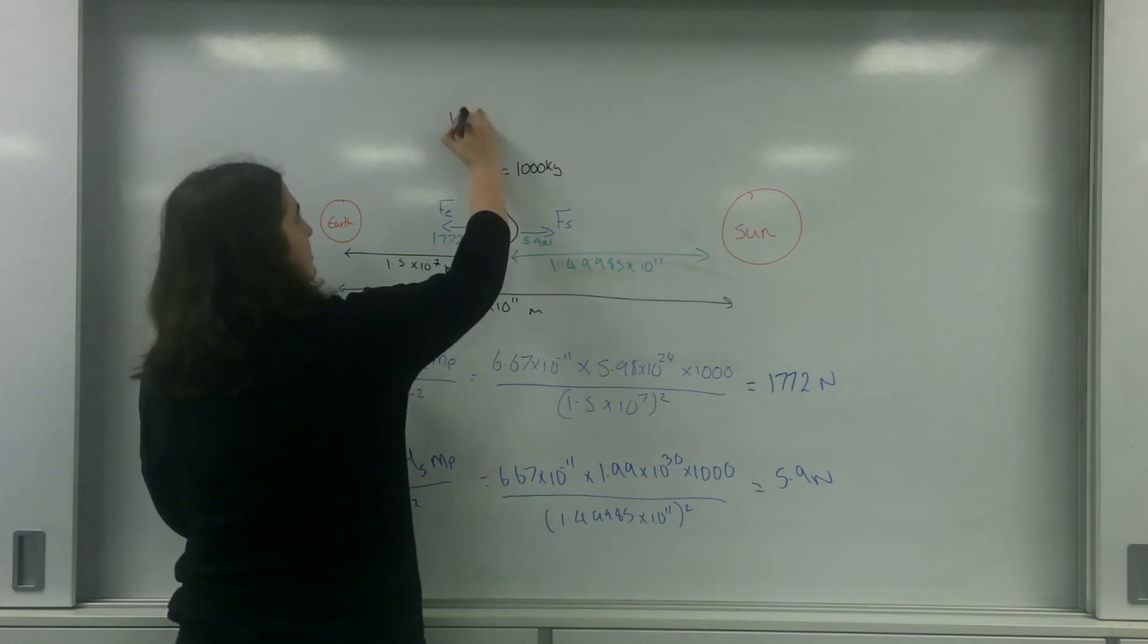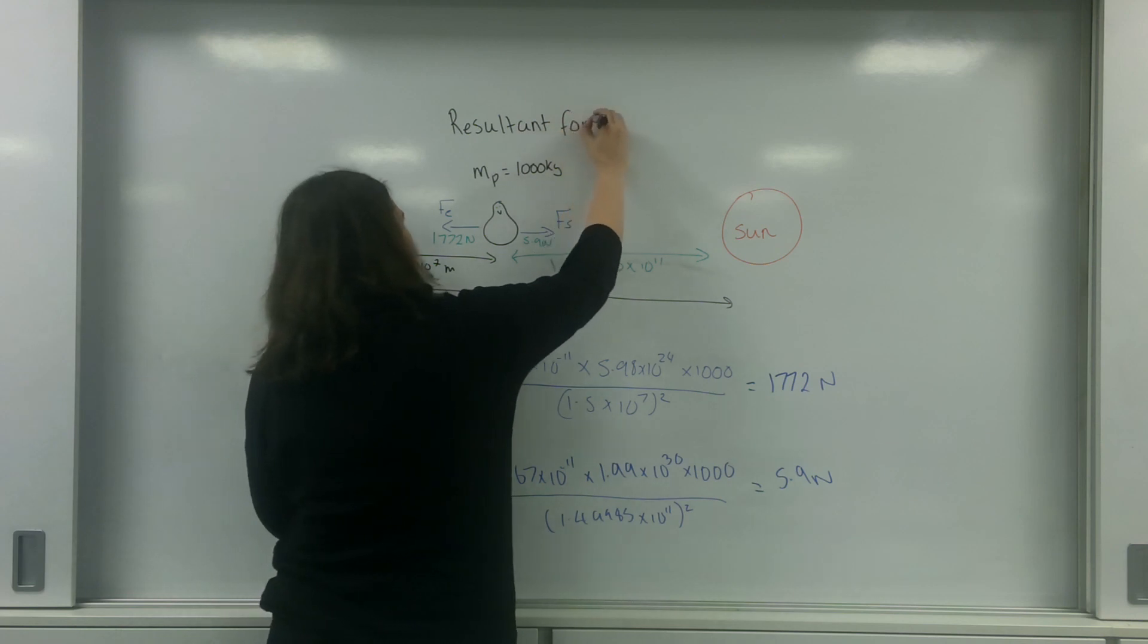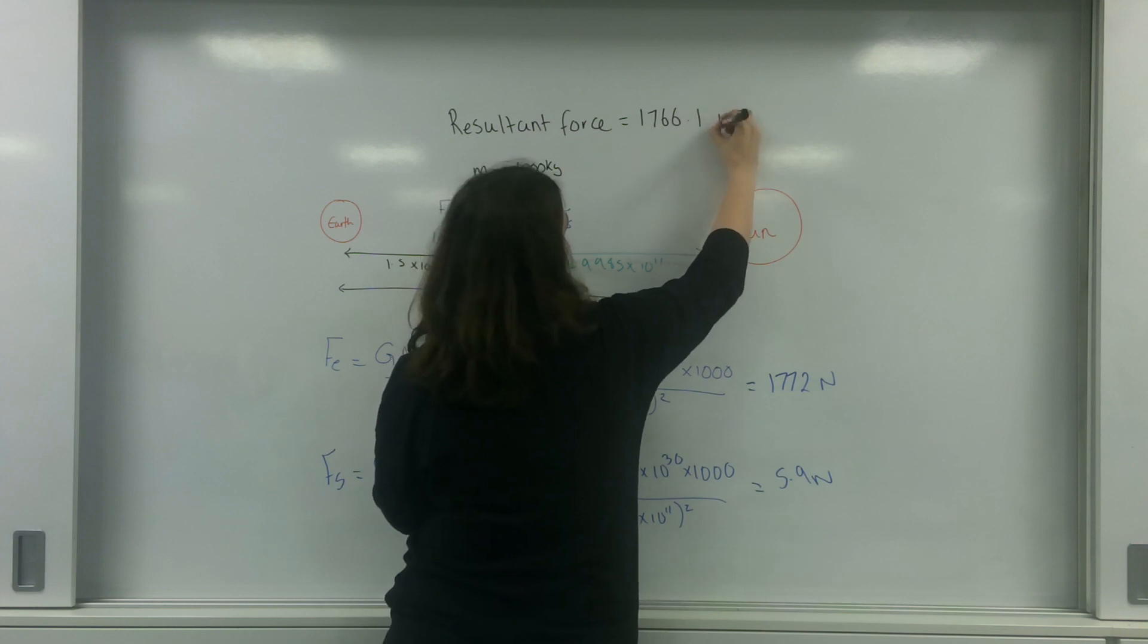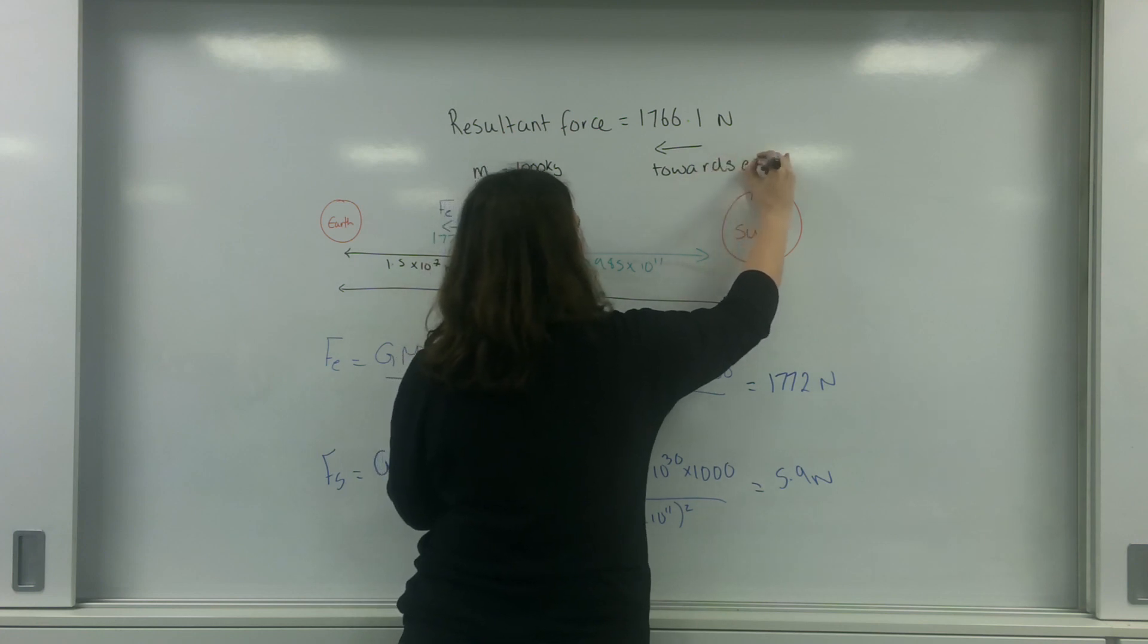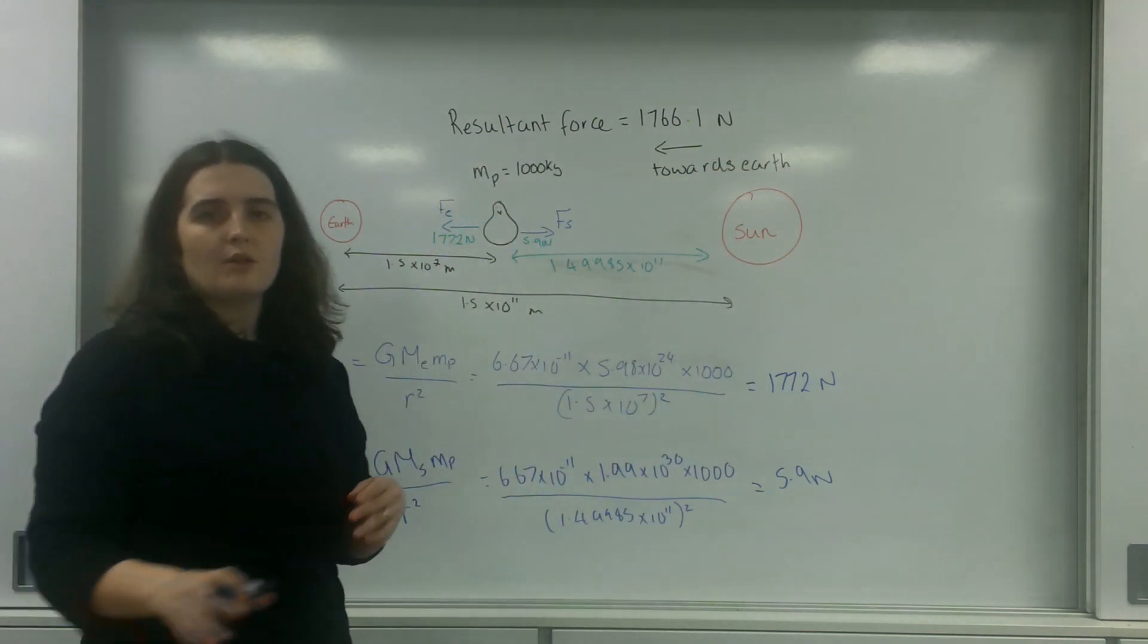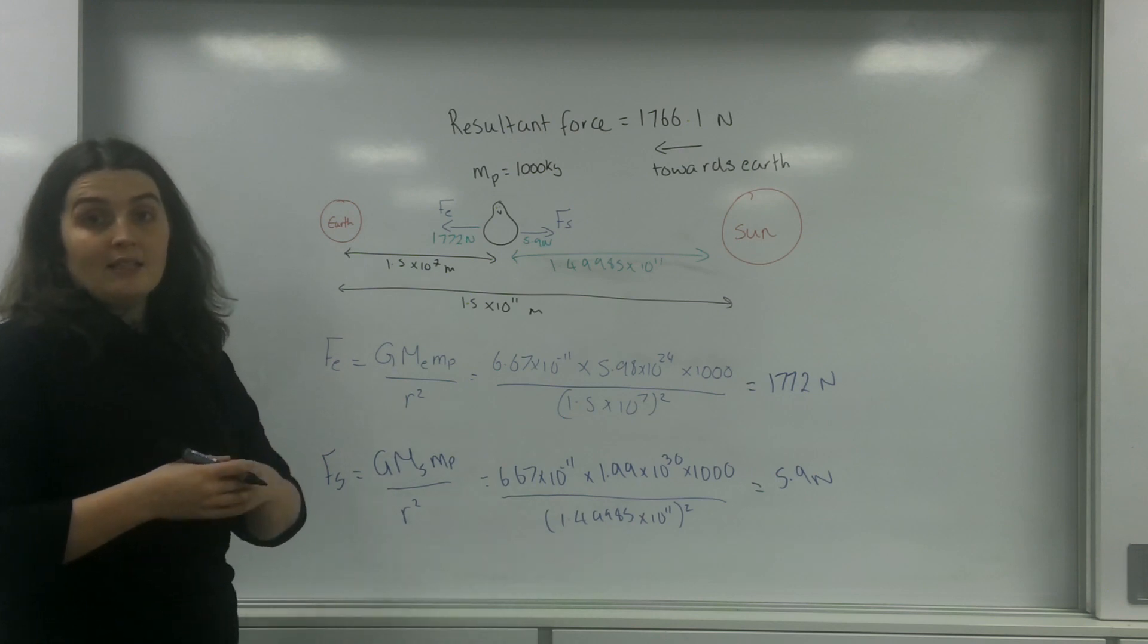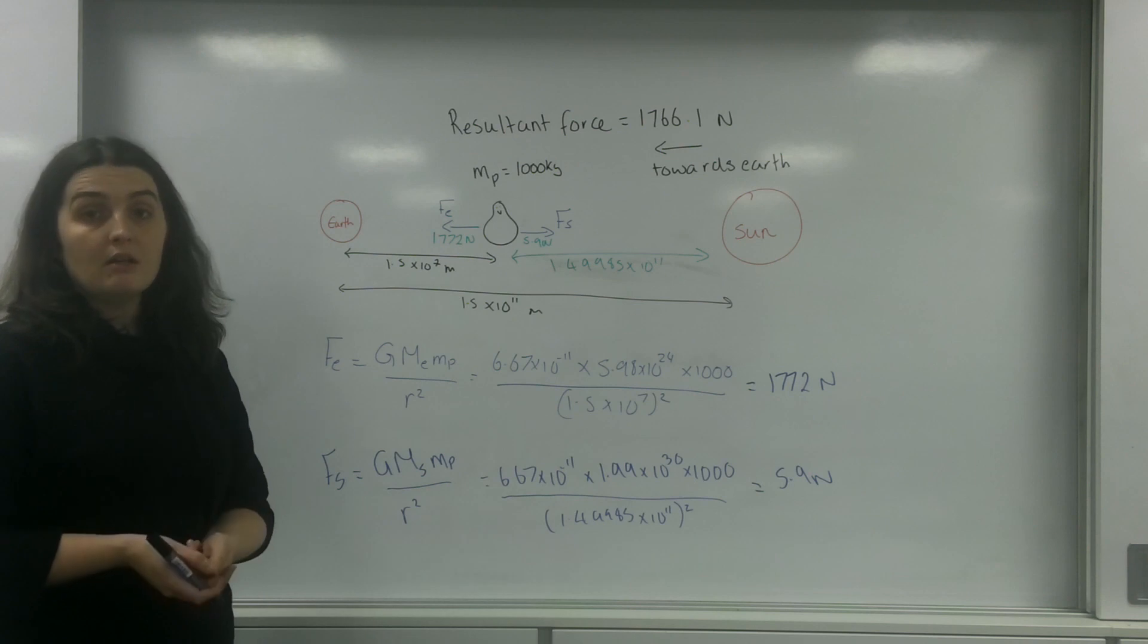And I have a resultant force of 1766.1 newtons towards Earth. This means that this penguin has got a greater force towards Earth, so that is the direction he will fall. And if this penguin had a tangential velocity, this penguin would move in a circle around the Earth.